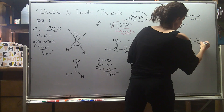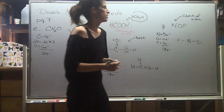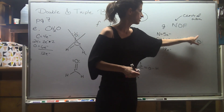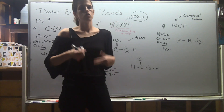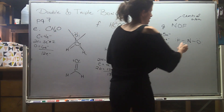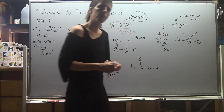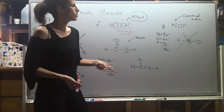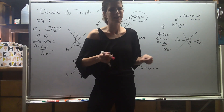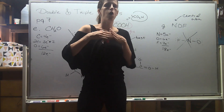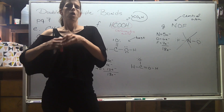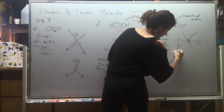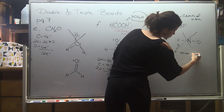Complete those octets and do a total count: two, four, six, eight, ten, twelve, fourteen, sixteen, eighteen, twenty. The structure used 20 but I only had 18 — I need to put a double bond somewhere. Where's the best place? Well, fluorine is so electronegative it doesn't like to share, so avoid double bonds to fluorine at all costs. Fluorine never double bonds — it just doesn't want to share.